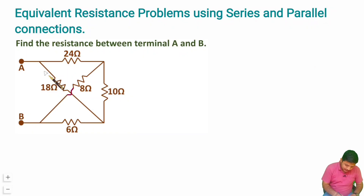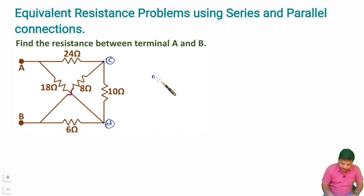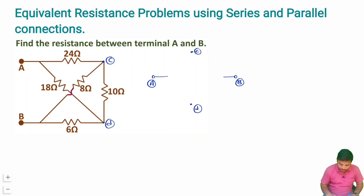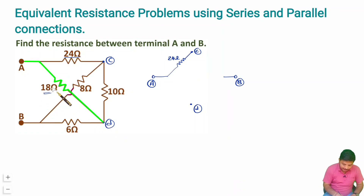Here we have an electrical network in which resistors are connected in a cross manner, making it difficult to identify series and parallel connections. Let me redraw this circuit by considering terminal A, terminal B, point C, and point D. The 24-ohm resistor is connected between A and C, and the 18-ohm resistor is connected between A and D.